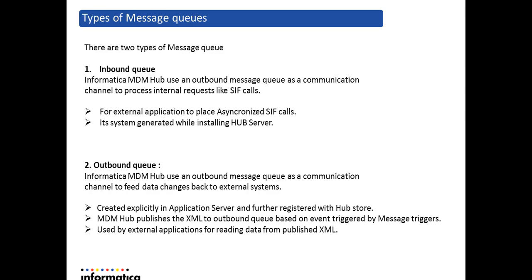In this slide I have highlighted the important points about the queues. As we discussed, inbound queues are only for asynchronous SIF requests and these are system-generated queues. Outbound queues are optional queues that one needs to create manually in the app server. With the help of message trigger setups, we can use these outbound queues to publish message XMLs when there is a data change in a base object. These queues can later be used by external applications based on their business needs.